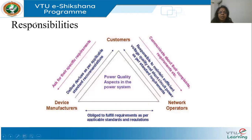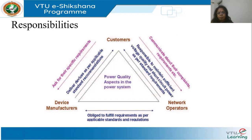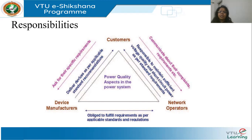Now, what are the responsibilities of the three main stakeholders in the power market from a power quality perspective? First is the customer or consumer. Second are the device manufacturers who supply equipment — a TV manufacturer, for example, is part of the ecosystem since their product runs on the supplied voltage. Third are the network operators — the utilities, private or public.